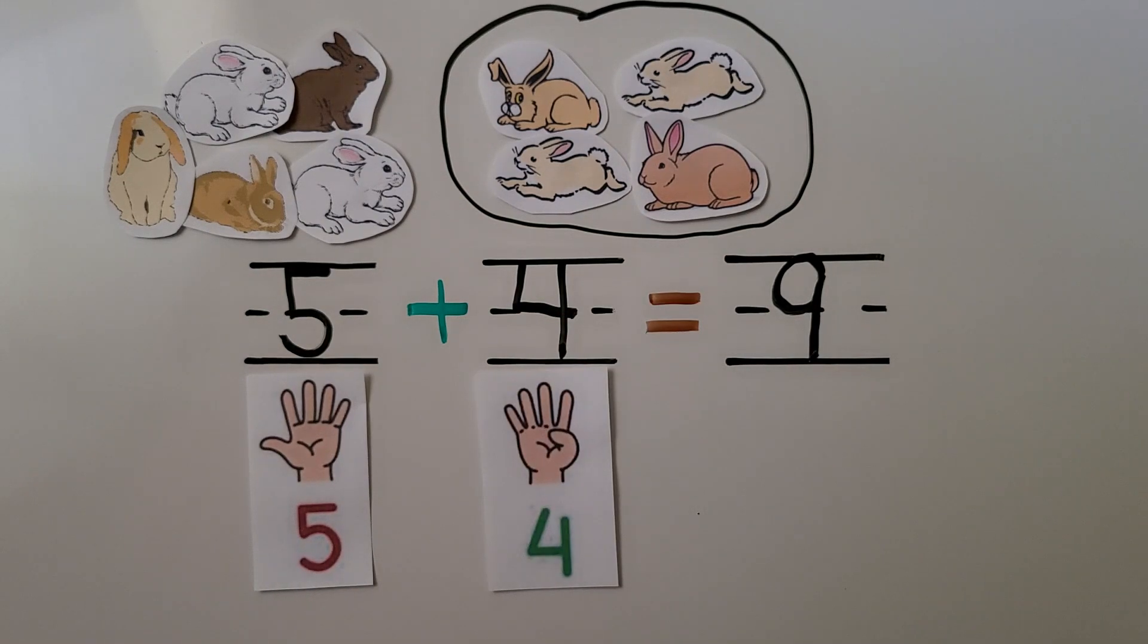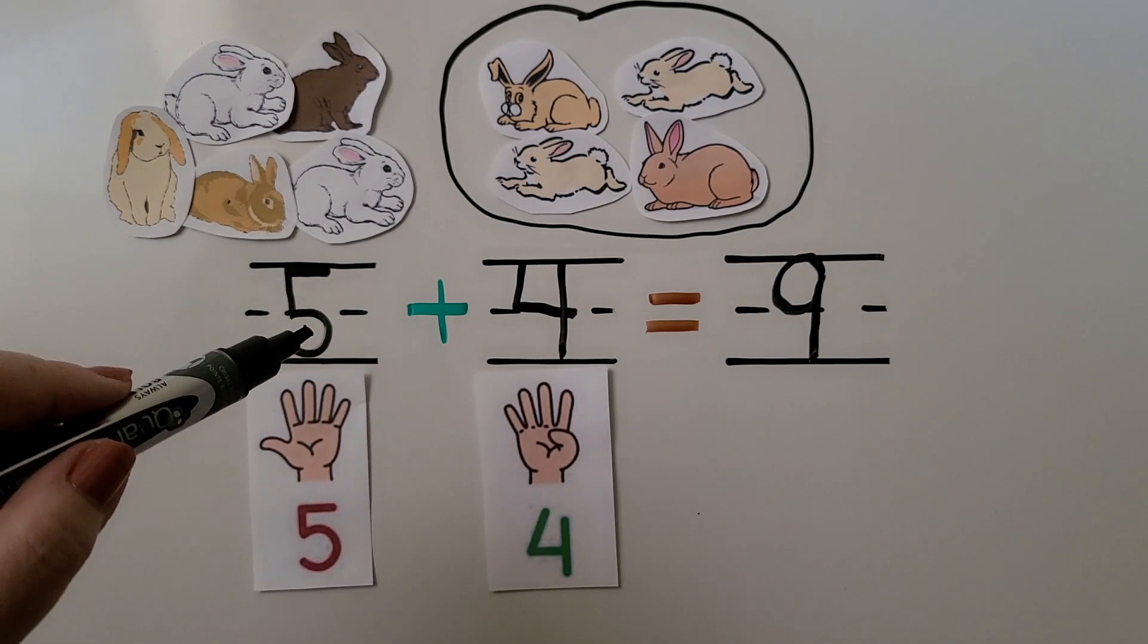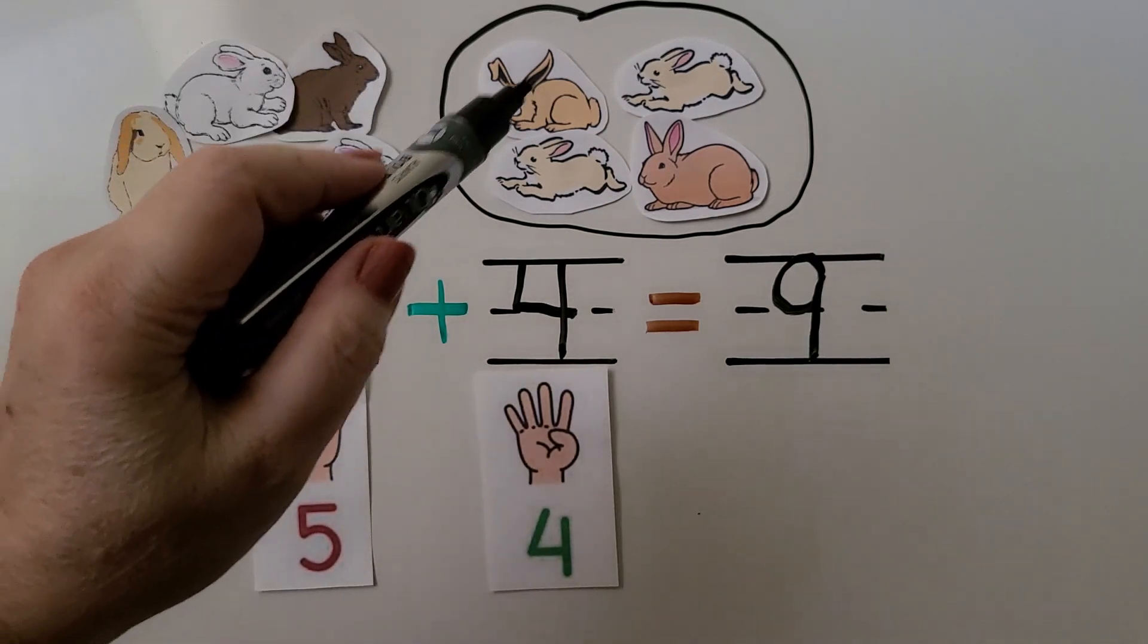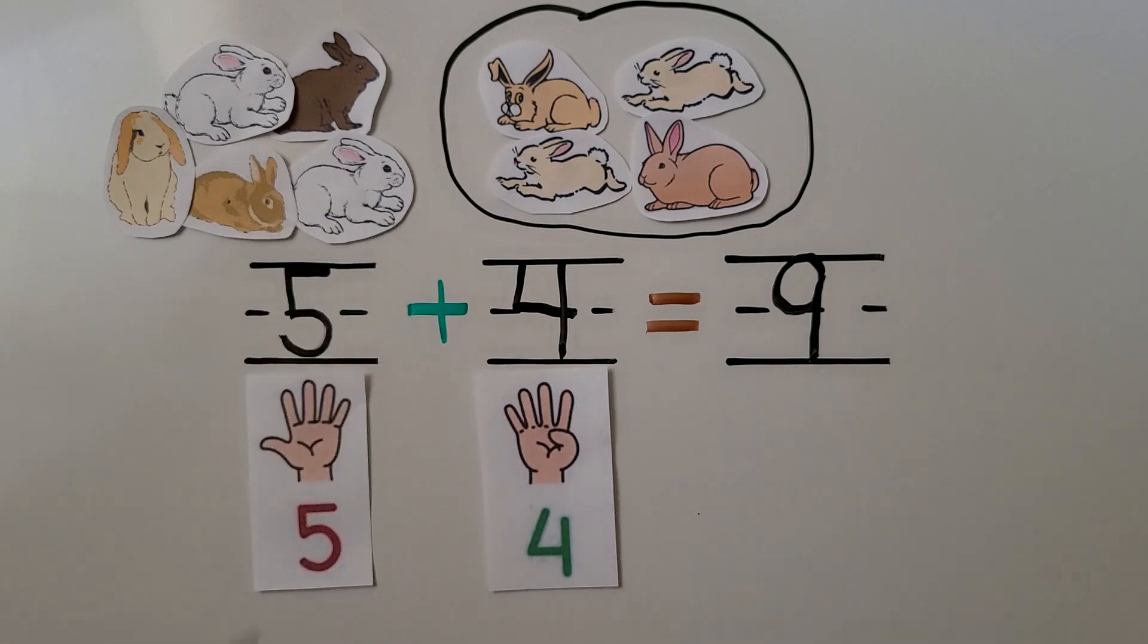We can count both groups to find how many in all. We could also start with five and count on four more. Five, six, seven, eight, nine. Five plus four is equal to nine.